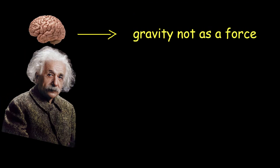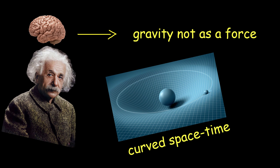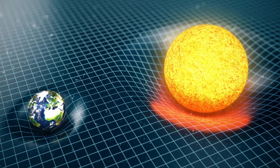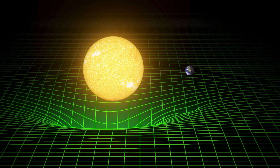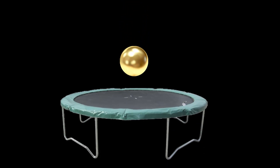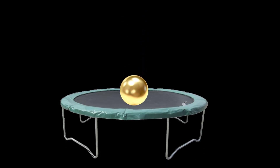This idea led Einstein to think of gravity not as a force, but as a result of curved space-time. According to general relativity, massive objects like the Earth and the Sun warp the fabric of space and time around them. This curvature tells objects how to move — for instance, the Earth orbits the Sun because the Sun's massive presence bends the space around it, creating a curved path. This is often visualized as a heavy ball placed on a trampoline, causing the fabric to bend and creating a well around the ball.